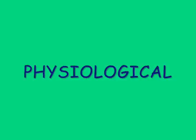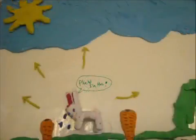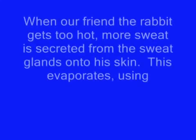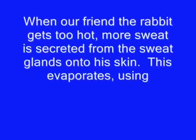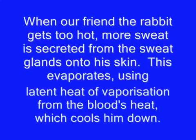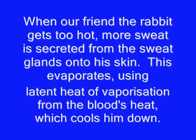Physiological! When our friend the rabbit gets too hot, more sweat is secreted from the sweat glands onto his skin. This evaporates using latent heat of vaporisation from the blood's heat, which cools him down. If the body temperature is too low, less sweat is secreted — less evaporation of water, so less loss of latent heat.